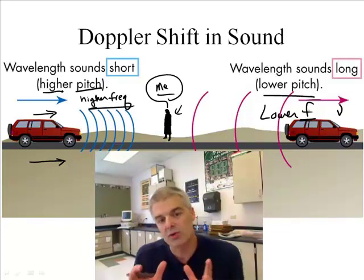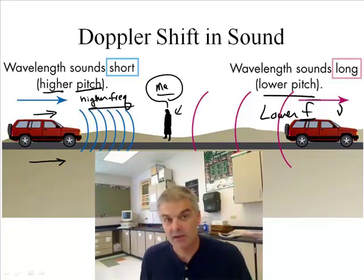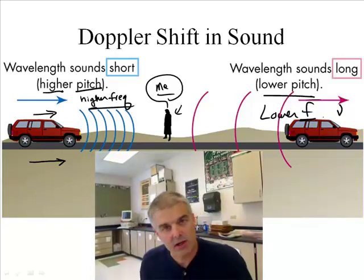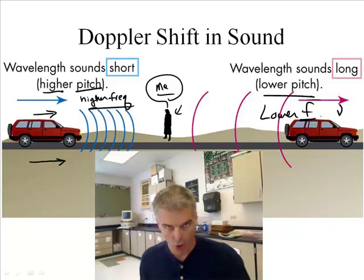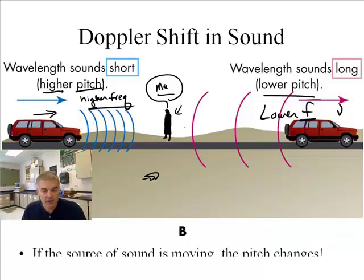An object moving towards you has a higher frequency than actually is being produced by the car, a higher pitch. And when it's moving away from you, maybe it's still honking his horn or holding his horn down, it's going to have a lower pitch, a lower frequency, because it's moving away from you. That's the Doppler shift. You should copy down this picture.